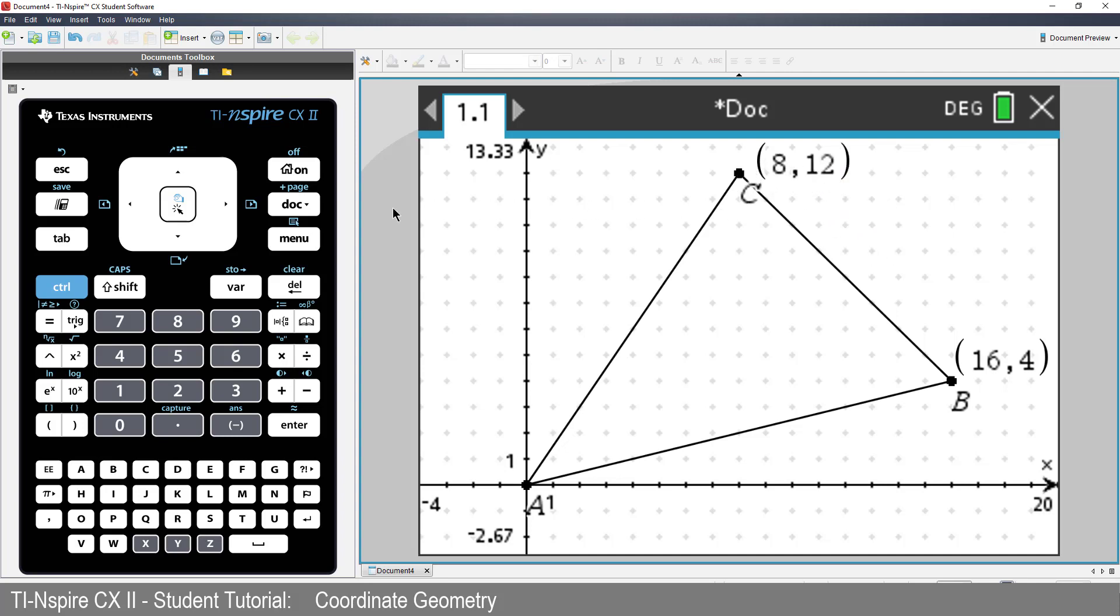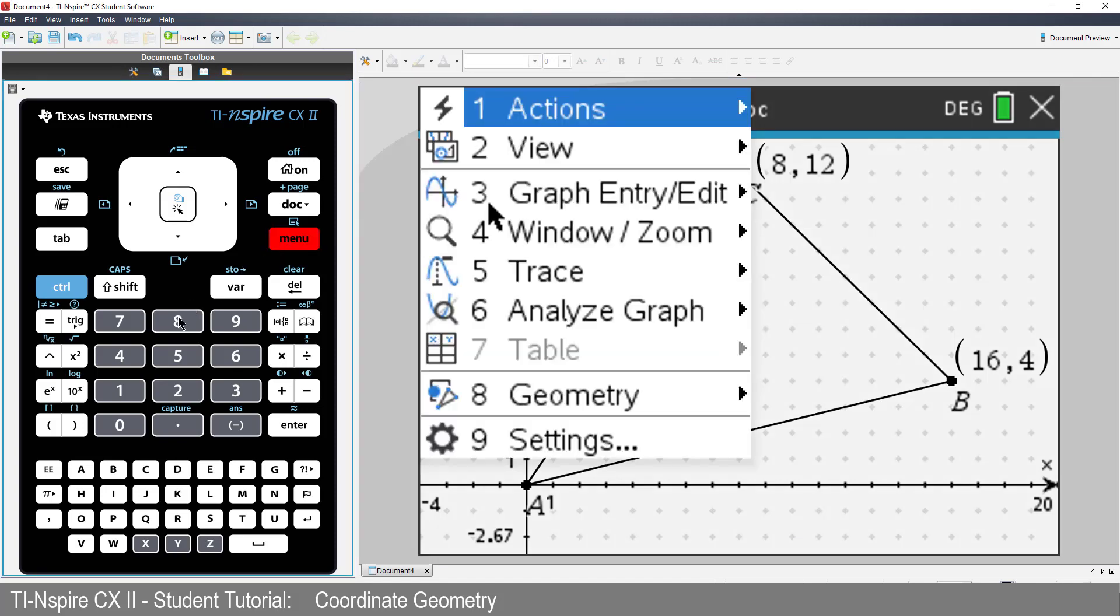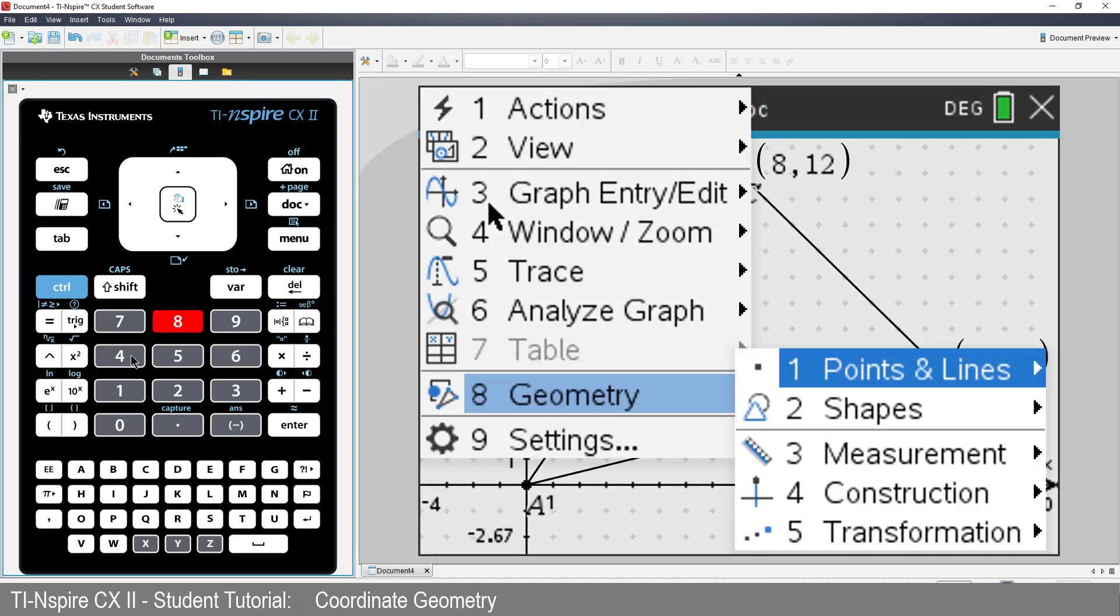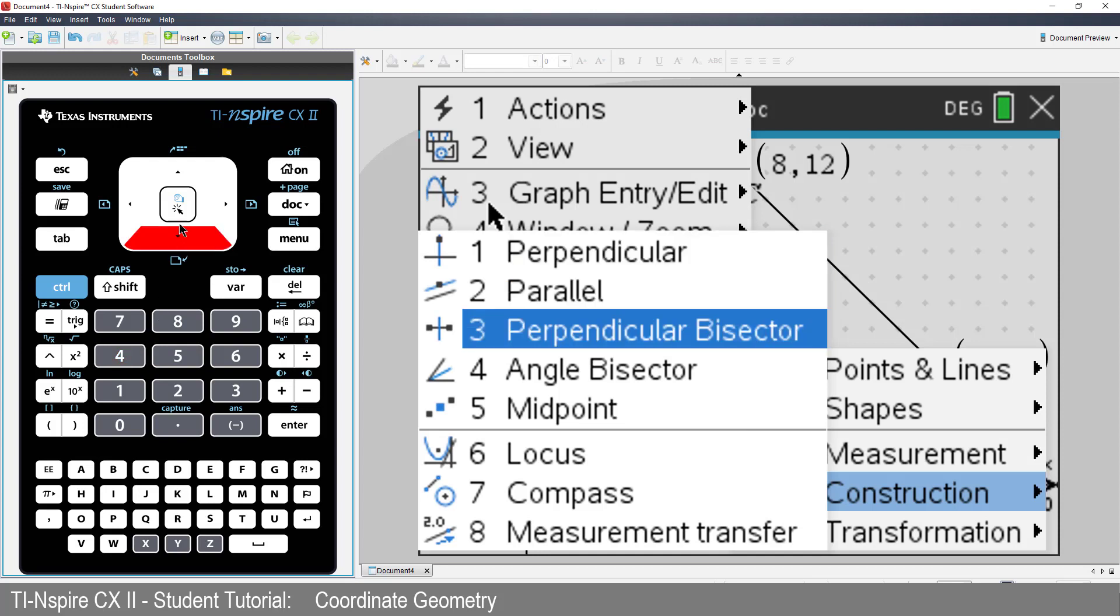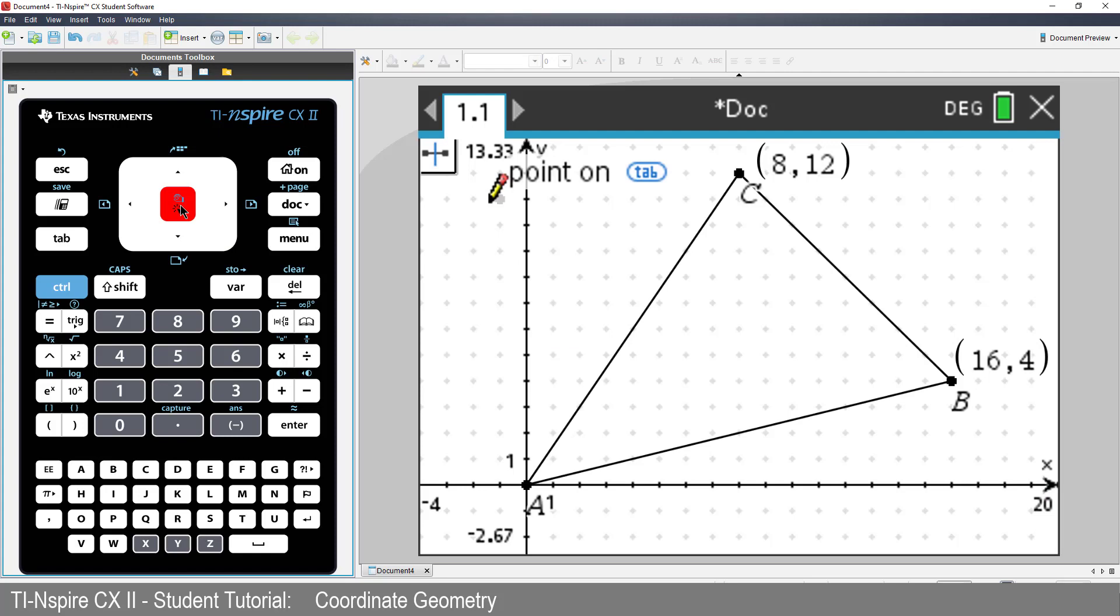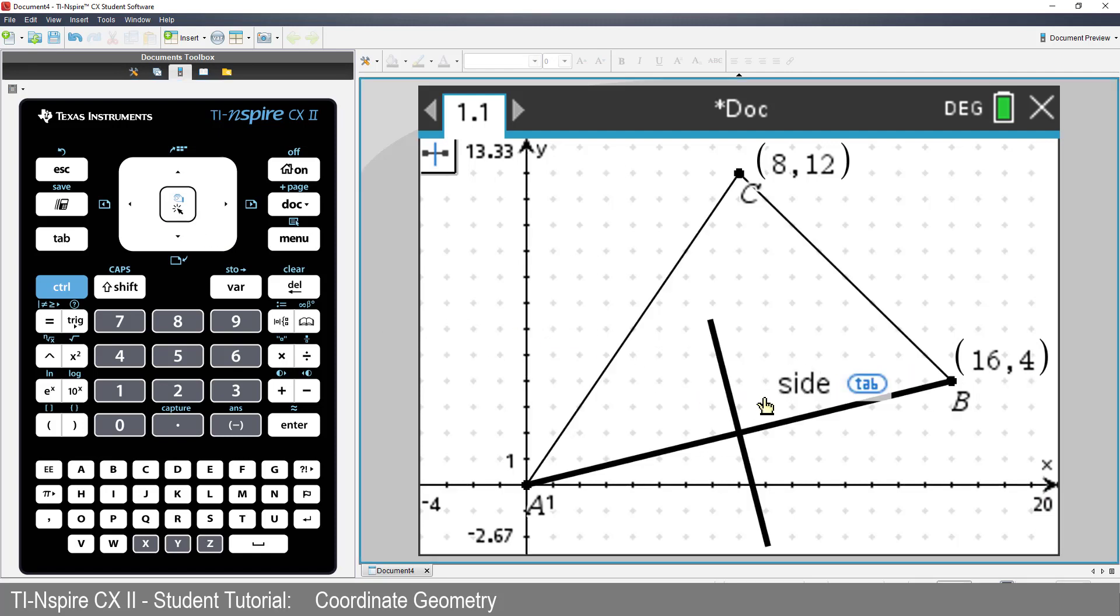Now it's time to do some construction work. Press Menu, Geometry, Construction, and select Perpendicular Bisector. Select Side AB. The new straight line is at right angles to Side AB and cuts it into two equal parts.